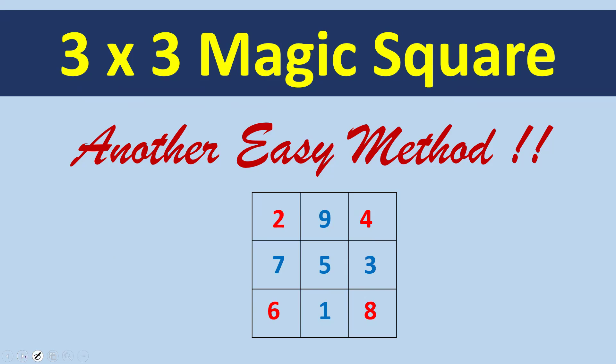Now let me take this example. In this case, let's say I have to fill numbers from 1 to 9 to get a sum of 15 in all the rows, columns, and diagonals.